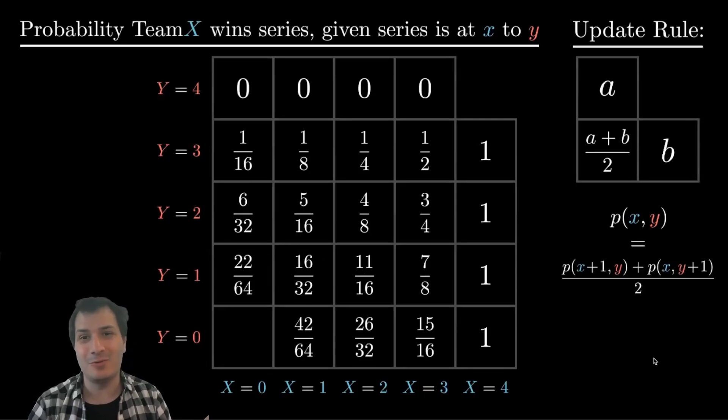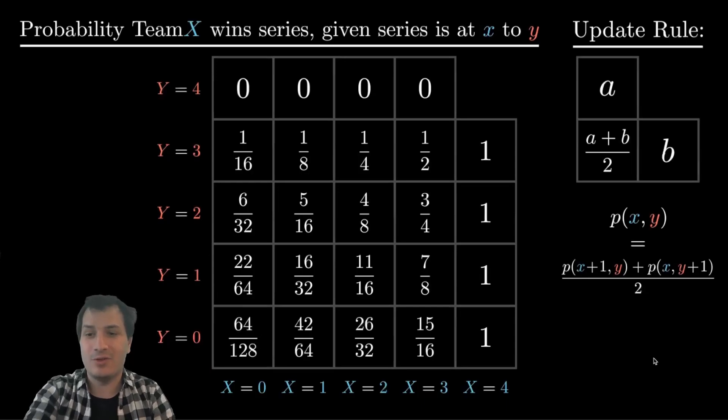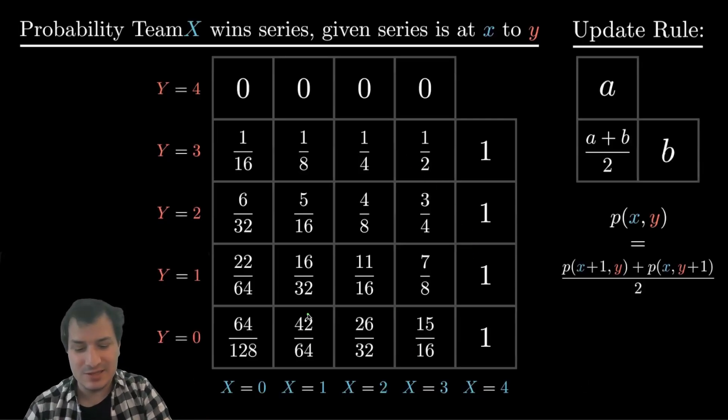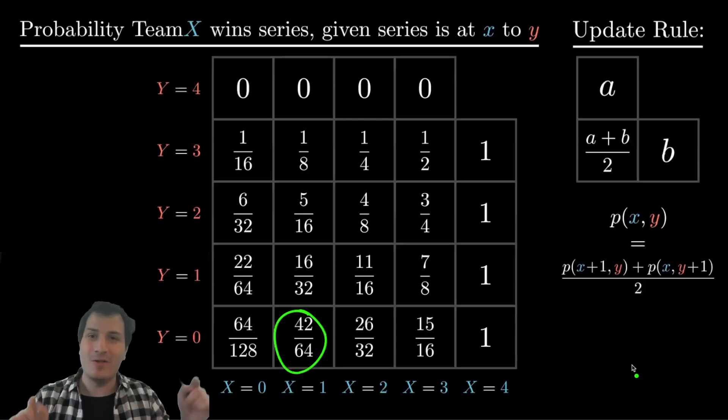And we can fill in the rest of the numbers. And we finally get to that number we were looking for, 42 out of 64, for the chance for x to win the series, given that they are up one to nothing, it is 42 out of 64. And the only computation we had to do was this operation of adding the numerators and bumping up the denominator by another power of two. Those sequence of additions leave you to 42 out of 64 without having to draw a big tree or count up all the branches of the tree.